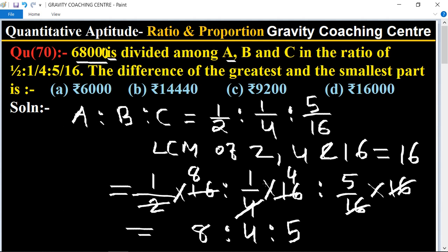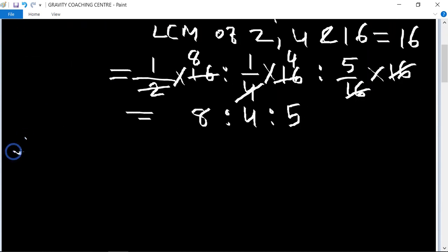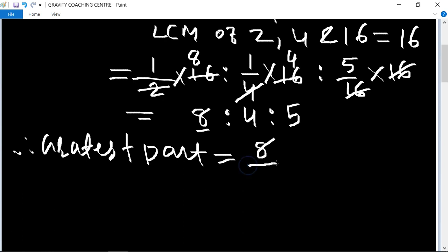So difference of the greatest and the smallest part. Therefore greatest part equal to 8 upon the sum of the numbers is 17, and amount is 68000. 17, 4 times 68, equals 32000.